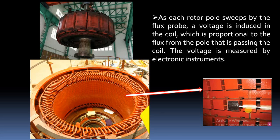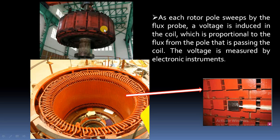The operation principle is straightforward: we glue the probe on the surface of the stator core. The rotor rotates inside the stator, and whenever each pole passes through this probe, the flux generated by that pole cuts the probe turns. A proportional amount of voltage is induced in the probe, which is displayed by the electronic instrument.